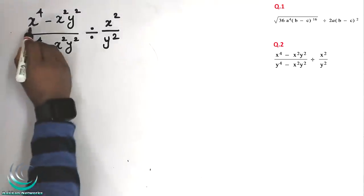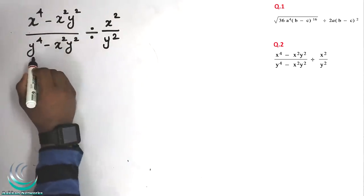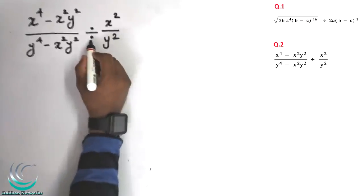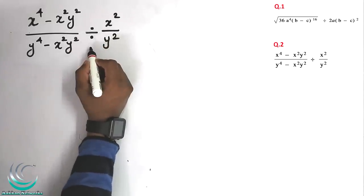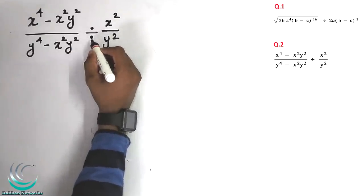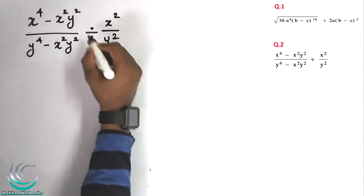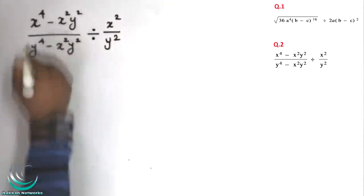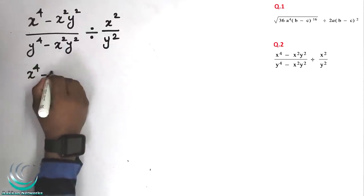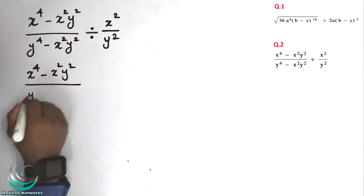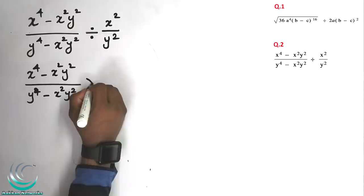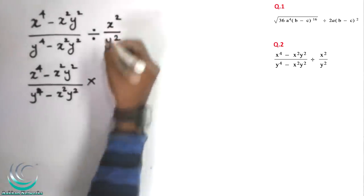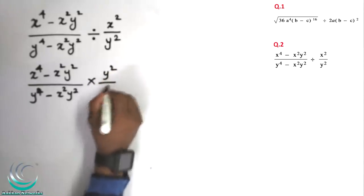Second question: x power 4 minus x² y² divided by y power 4 minus x² y², multiplied by y power 2 by x power 2. Now we start with two steps.